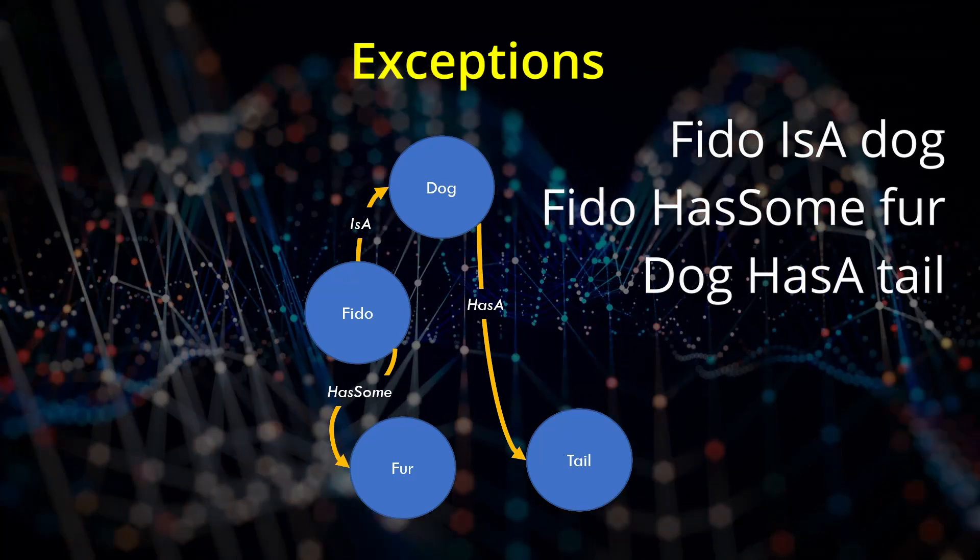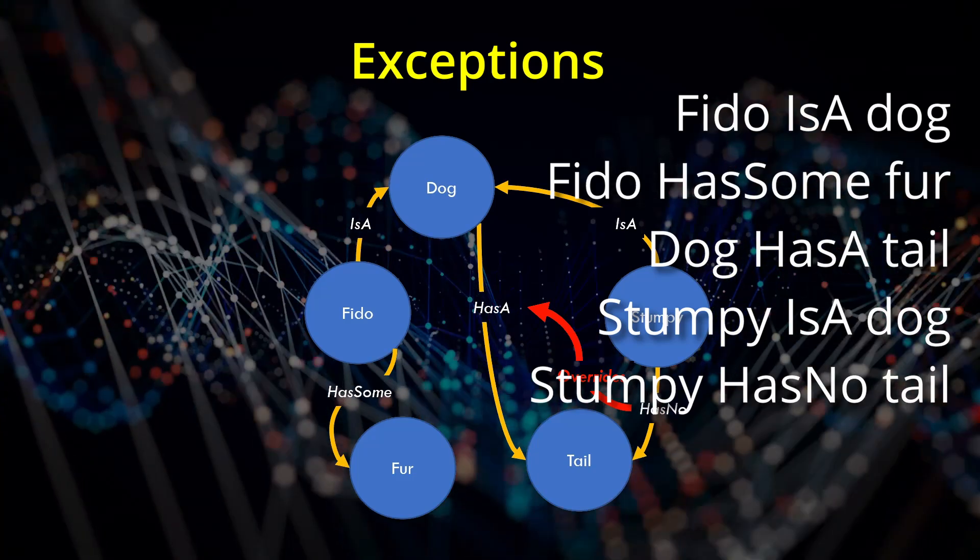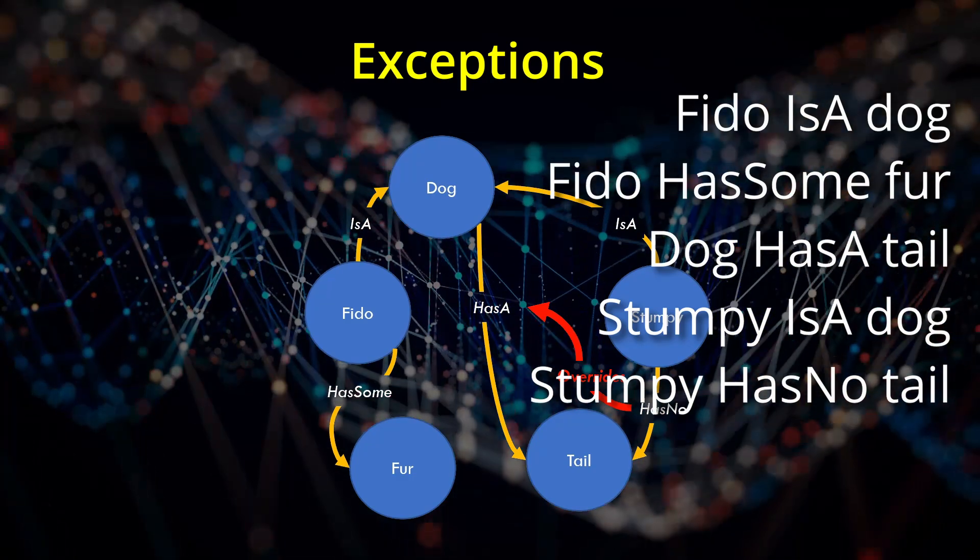Then I touched on exceptions, so that your graph can know that all dogs have tails except that Stumpy is a dog which doesn't.